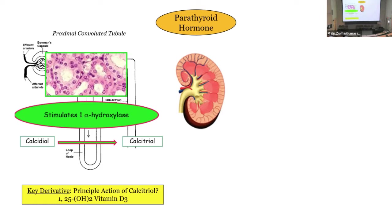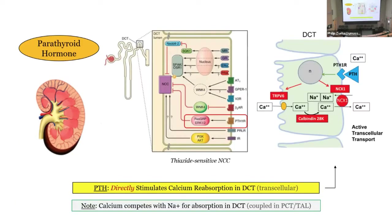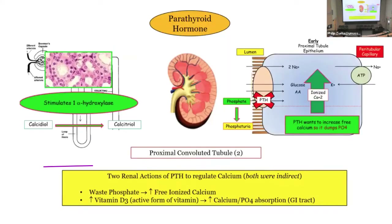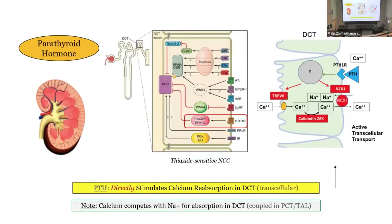That's the second thing parathyroid does at the level of the kidney. It's vitamin D and its effects on the intestine that lead to increased calcium. In the distal convoluted tubule it's more direct. PTH directly stimulates calcium reabsorption via transcellular channels.